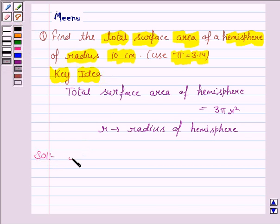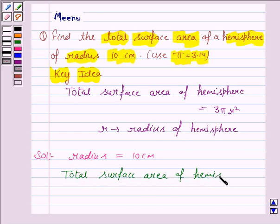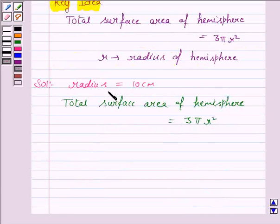The radius of hemisphere is given to us as 10 cm. Now, the total surface area of hemisphere is equal to 3 pi r squared. r is 10 cm, so the unit of area will be cm squared.